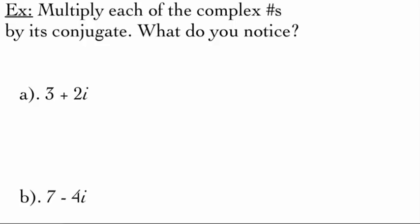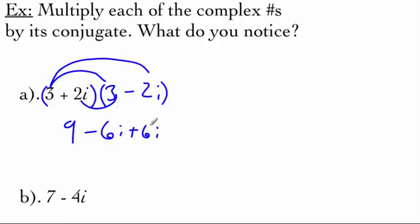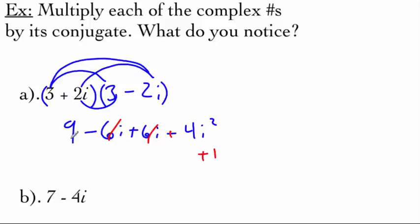Next we'll do some multiplying with complex conjugates. Looking at 3 plus 2i, its conjugate is 3 minus 2i. We multiply these together by FOILing: 3 times 3 is 9, 3 times negative 2i is negative 6i, 2i times 3 is plus 6i, and 2i times negative 2i is negative 4i squared. The negative 6i and positive 6i cancel. Since i squared is negative 1, negative 4 times negative 1 is positive 4. So 9 plus 4 equals 13.